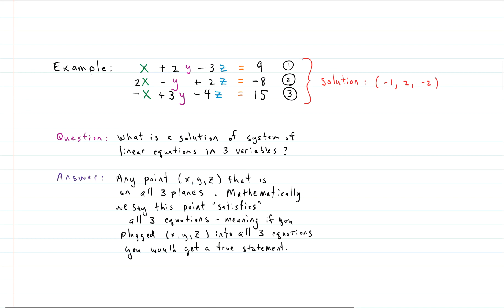Here's an example system of three linear equations in three variables — we have three variables x, y, and z. This specific system has one solution, meaning the planes touch in one spot. That one spot in three-space is x equals negative one, y equals two, and z equals negative two. So a solution to a system is any ordered triplet (x, y, z), any point in three-space that touches all three planes at once.